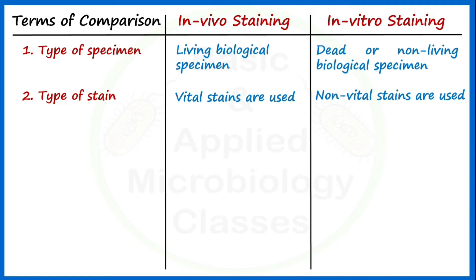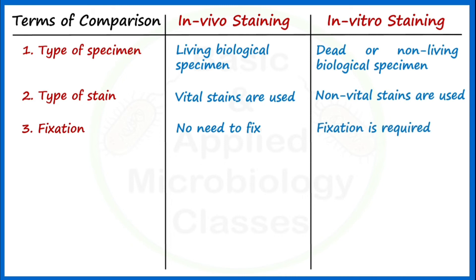The third point of difference is fixation. In in vivo staining, fixation is not required, whereas in in vitro staining, fixation is required. Fixation is a process used to preserve the internal and external structure of the biological specimen being examined. In laboratory staining, fixation is generally carried out by means of heat or by the use of certain chemicals.